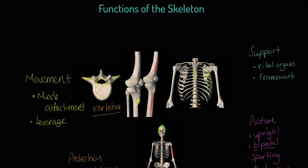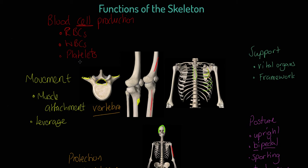Next is blood cell production. The skeleton is responsible for the production of red blood cells (RBCs), which are critical for oxygen and CO2 transportation. It also produces white blood cells, which are critical within the immune system, and platelets — which are not full cells but fragments of cells. These are all produced in the bone marrow found in the central shaft of long bones.